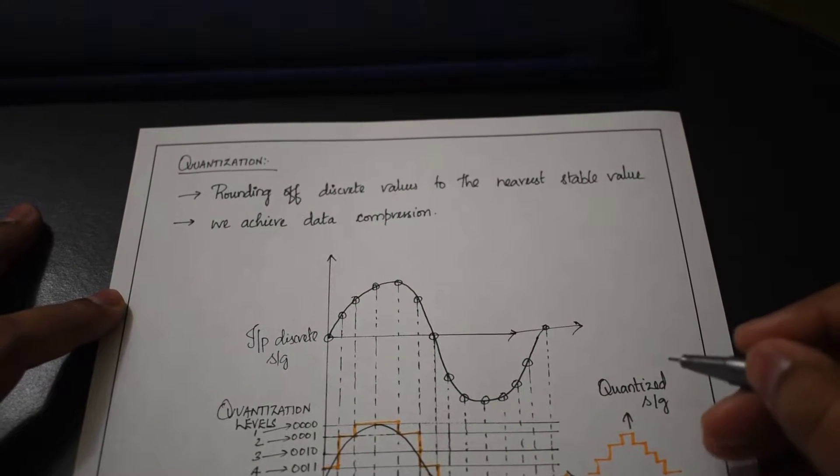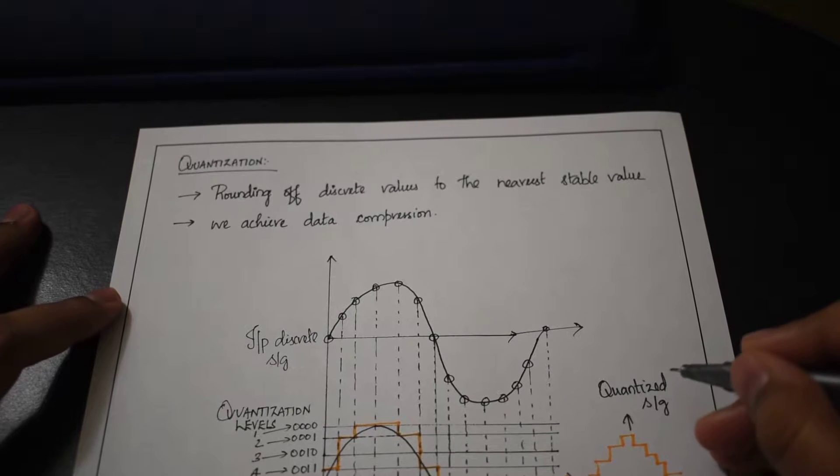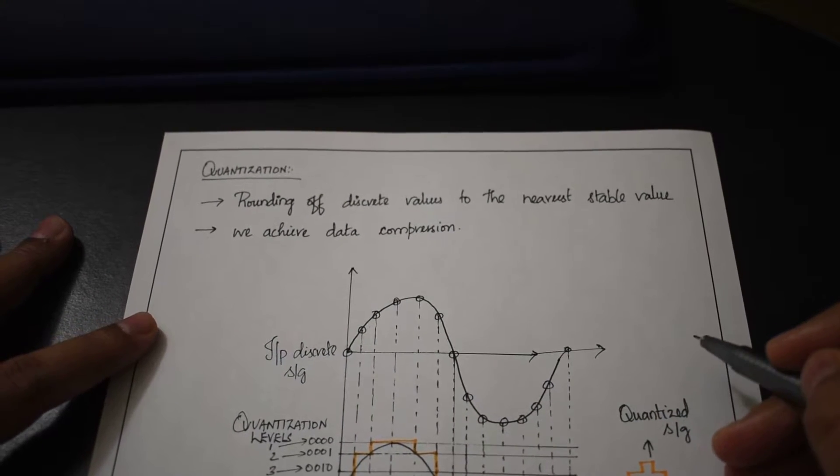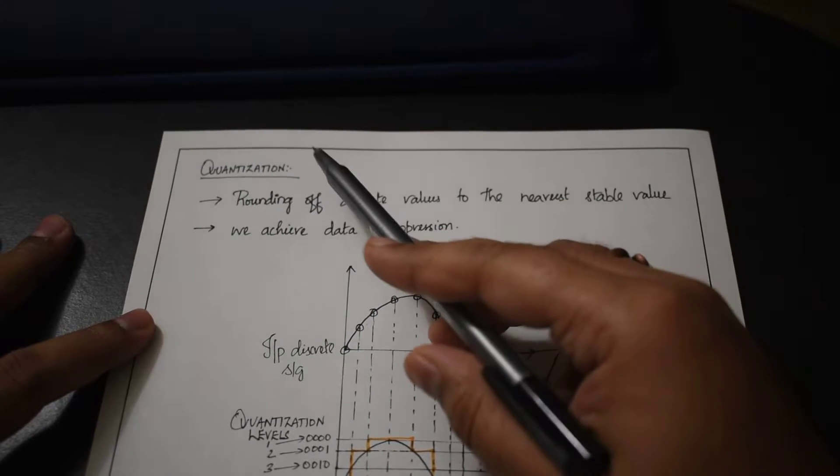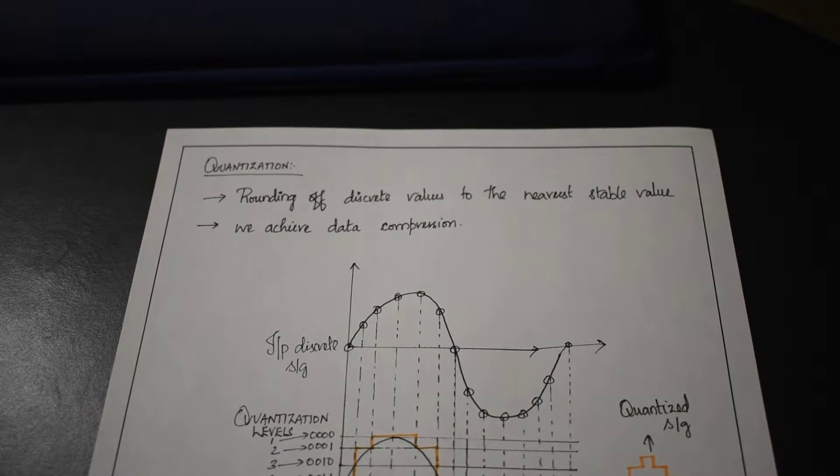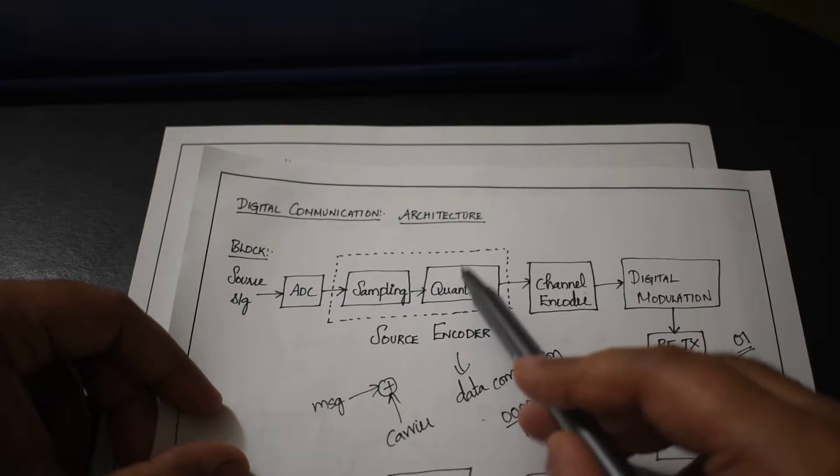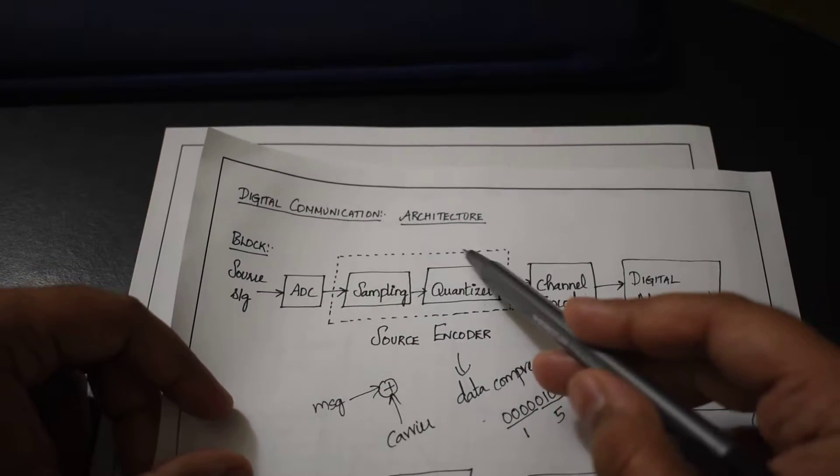Hi friends, welcome to Electrical Engineers Convention. We are in the digital modulations playlist. The next topic after sampling is quantization. Let's recall from our digital modulation architecture that we have a sampling block followed by a quantizer block from the digital communication architecture.